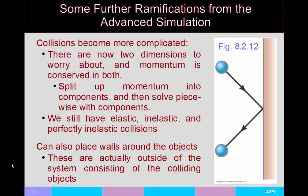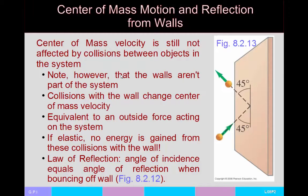To summarize from the simulation: in two dimensions, collisions become more complicated. You split momentum into components and conserve each component separately — px, py, and in three dimensions pz. There are still elastic, inelastic, and perfectly inelastic collisions. Walls act as an outside force that can change the system's center of mass velocity. With an elastic collision you don't lose energy from wall collisions, but with reduced elasticity you lose energy after each wall collision until the system reaches zero energy.